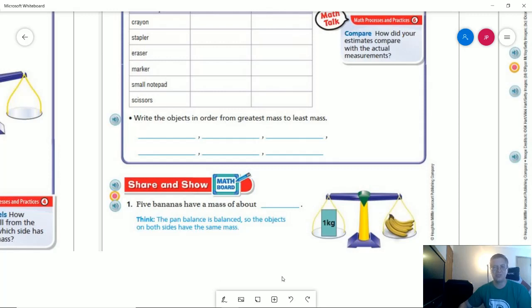Let's take a look at our sharing show. So number one, five bananas have a mass of about, and then we have this weight on this side. The weight has a mass of one kilogram and then we have a small bunch of bananas, and so we would say that the five bananas have a mass of about one kilogram.